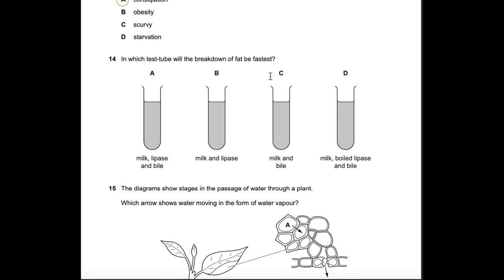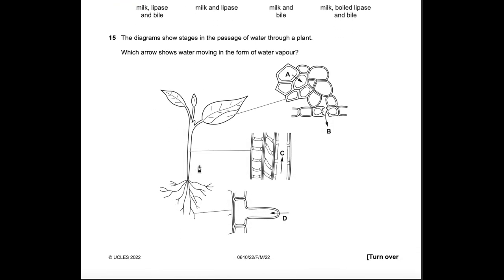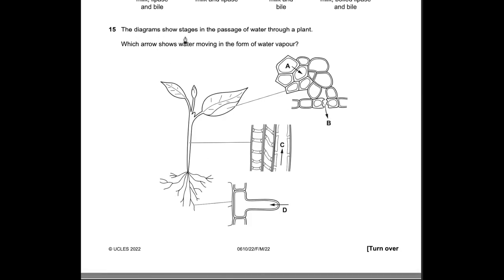Question 14: In which test tube will the breakdown of fat be fastest? The key word is fastest. The test tube containing both lipase and bile will break down fat most rapidly. Bile is secreted by the liver and emulsifies fat — a form of mechanical digestion — increasing surface area for lipase. The other test tubes lack one of these components so will be slower. Answer: A.